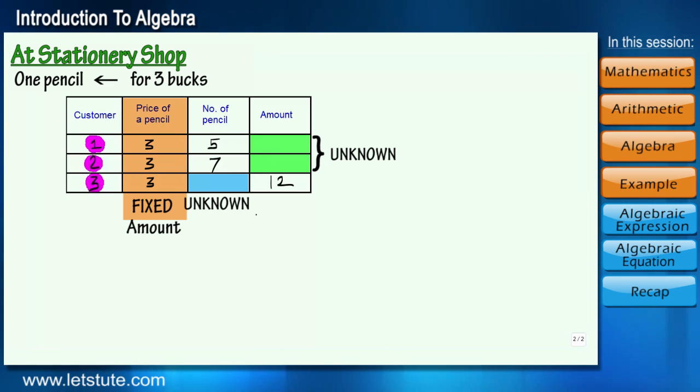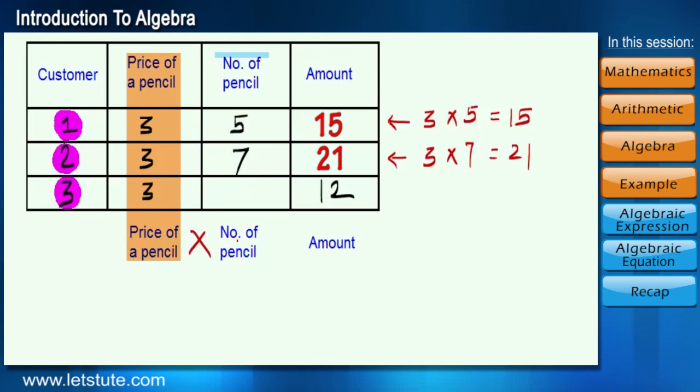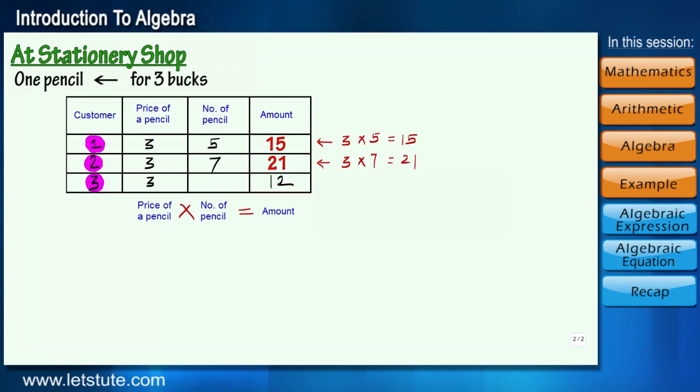Let us first find out the unknown values here. What should be the total amount for five pencils for customer one? It is 3 times 5, that is 15. Similarly for seven pencils, the amount will be 21 bucks. So what did we do exactly here? We have multiplied price of a pencil with number of pencils sold to get the unknown total amount. But for the third customer, in 12 bucks what will be the number of pencils? Well, all we have to do is divide the total amount 12 by price of a pencil, that is 3, and that will give us 4.